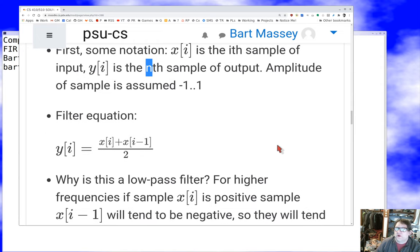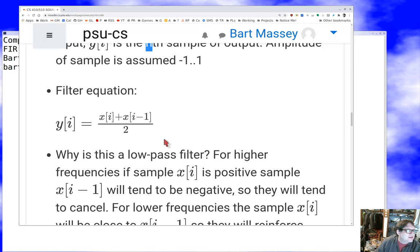Y sub i is the i-th sample of output. The amplitude of the sample is assumed to be between minus 1 and 1. The filter equation is going to be: take the i-th input, the previous input (the i-1th input), add them up and divide by 2. This is a convolution with coefficient one-half for X sub i and one-half for X sub i minus 1.